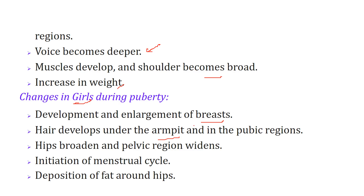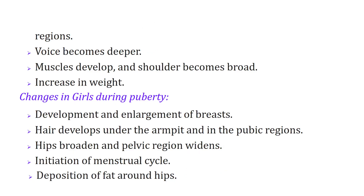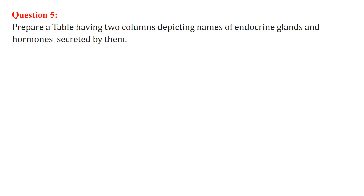Changes in girls: the breasts become enlarged. Hair develops in armpit and pubic regions, similar to boys. The hips are broadened and the pelvic region widens — because she may carry a child. The menstruation cycle starts, and deposition of fat around hips takes place.